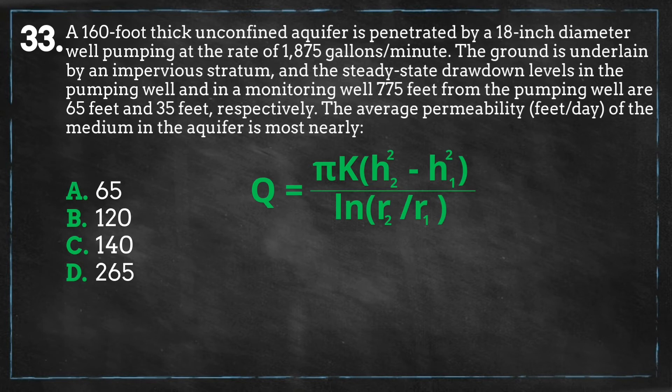Similar to episode 31, our first sampling point is the pumping well itself, so we will use the radius of the pumping well as r1, and r2 is the distance from the pumping well to the second sampling point, which is the observation well.